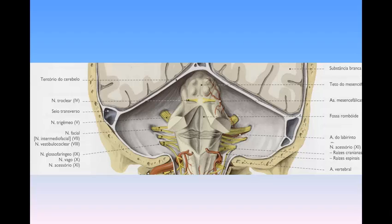A little below the lateral angles, on a level with the striae medullares, the ventricular cavity is prolonged outward in the form of two narrow lateral recesses, one on either side. These are situated between the inferior peduncles and the flocculi, and reach as far as the attachments of the glossopharyngeal and vagus nerves.